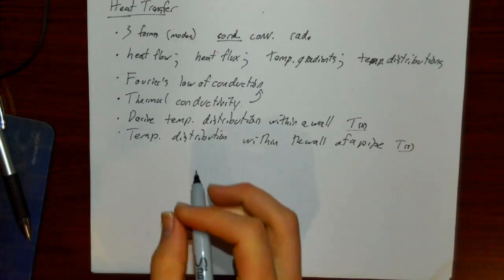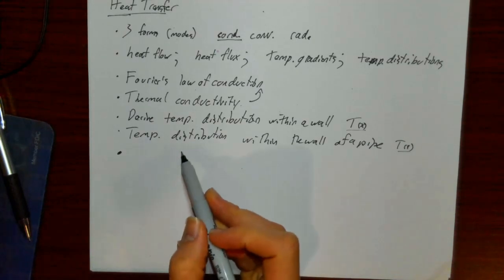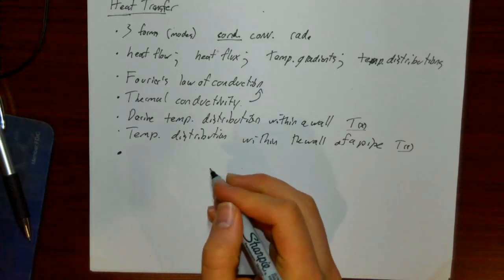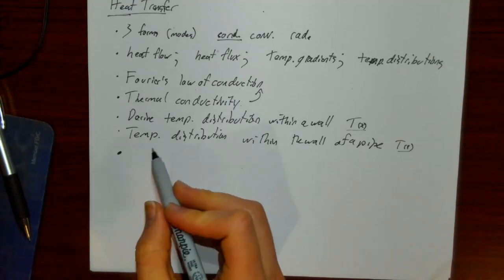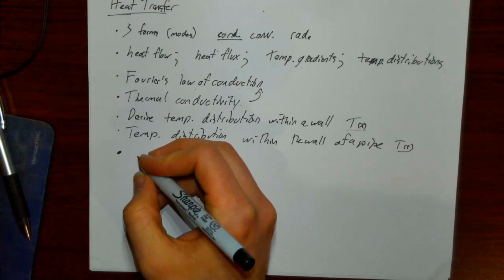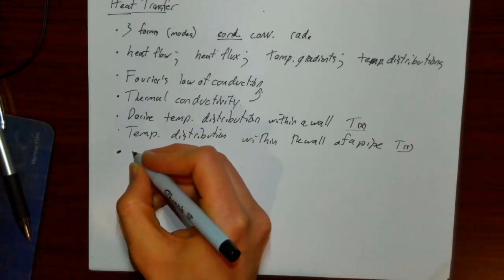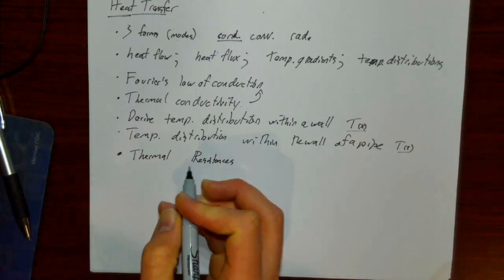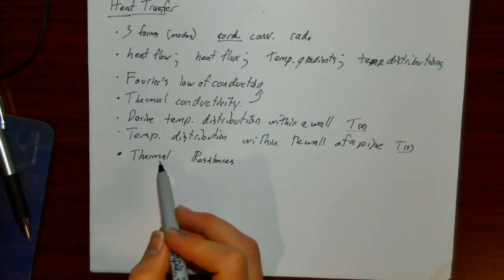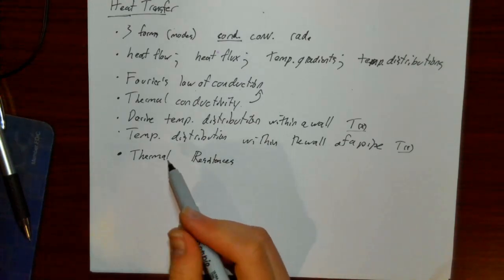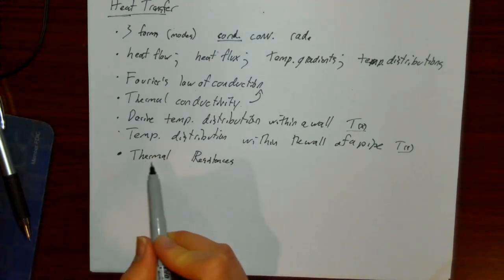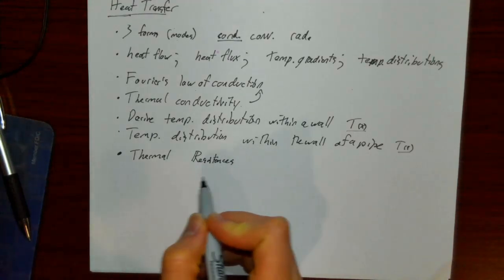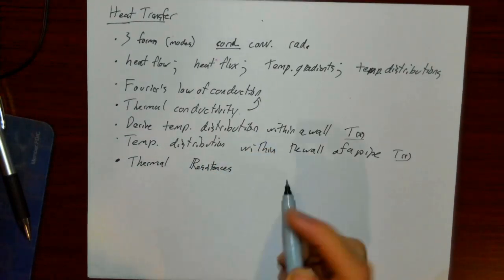Sometimes we care a lot about temperature distributions, but often in engineering we just care about the temperature on one side versus the other — temperature differences and heat flows. Formulating things that way leads to the idea of thermal resistances, which have similar algebraic relationships to fluidic or electrical resistances we've talked about earlier in the class. That's the plan for today.